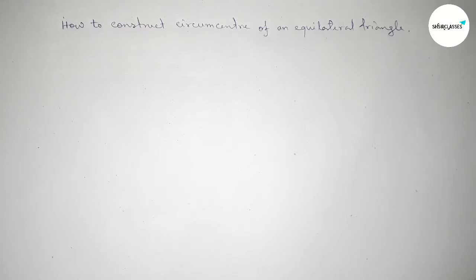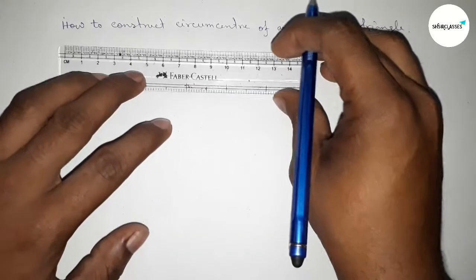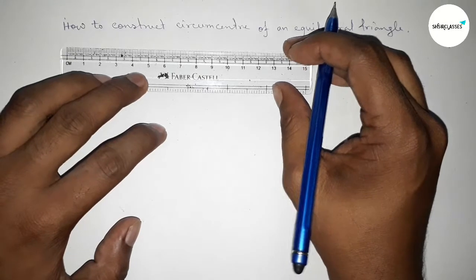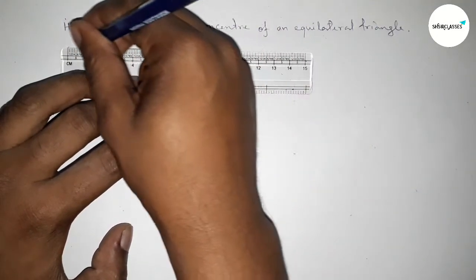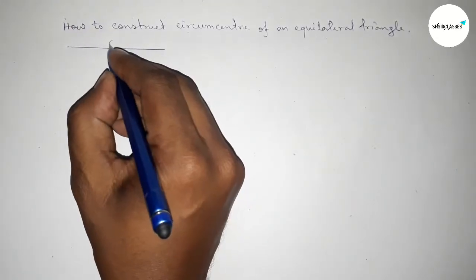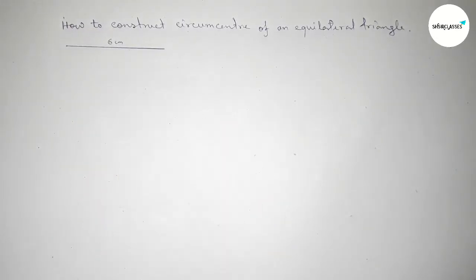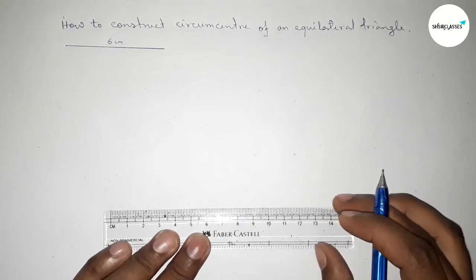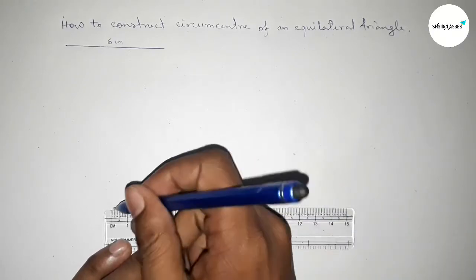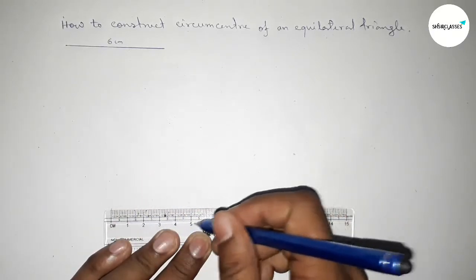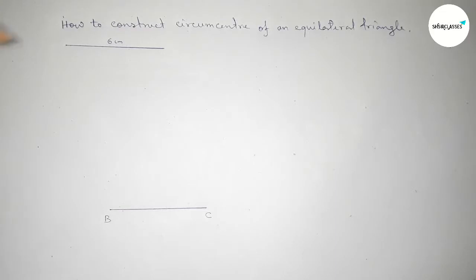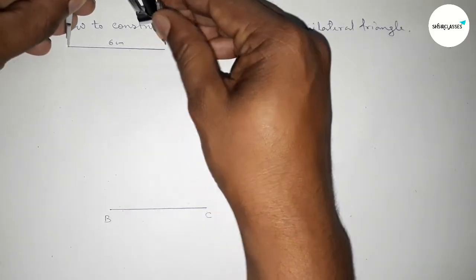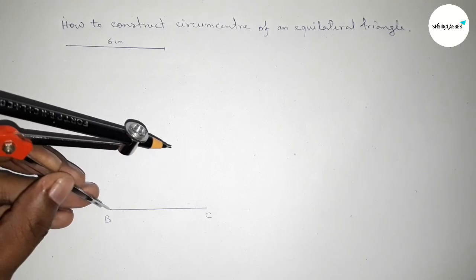First of all, we have to construct an equilateral triangle. Taking a line of length six centimeters — this is six centimeters. Again, we draw a line of length six centimeters. Taking here point B and here point C, then taking the length six centimeters using the compass.